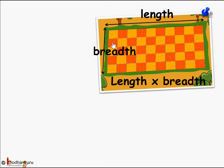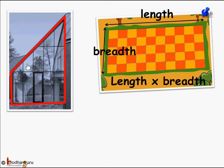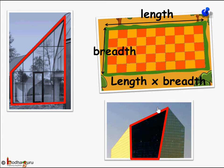For example, here is a rectangular field — its area is length into breadth. But in real life, when we see different figures like a house or a building with nice glass, we find a lot of shapes which are not just rectangle or square, but a quadrilateral.